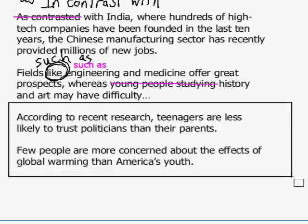Here's a very ambiguous example: 'According to recent research, teenagers are less likely to trust politicians than their parents.' This is ambiguous. Does it mean teenagers are less likely to trust politicians than they are to trust their parents? Or does it mean teenagers are less likely than their parents are to trust politicians? Either of those sentences is clear, but as written, this sentence is not. Reject that in the GMAT exam.